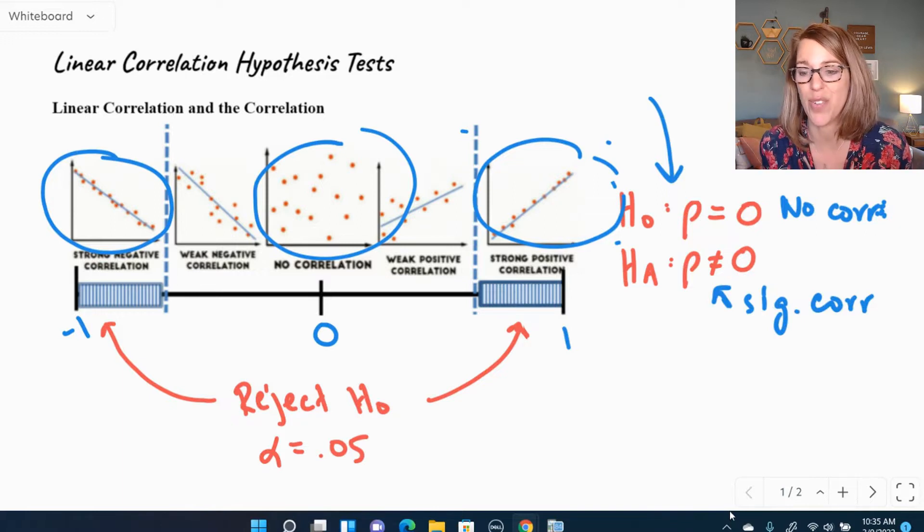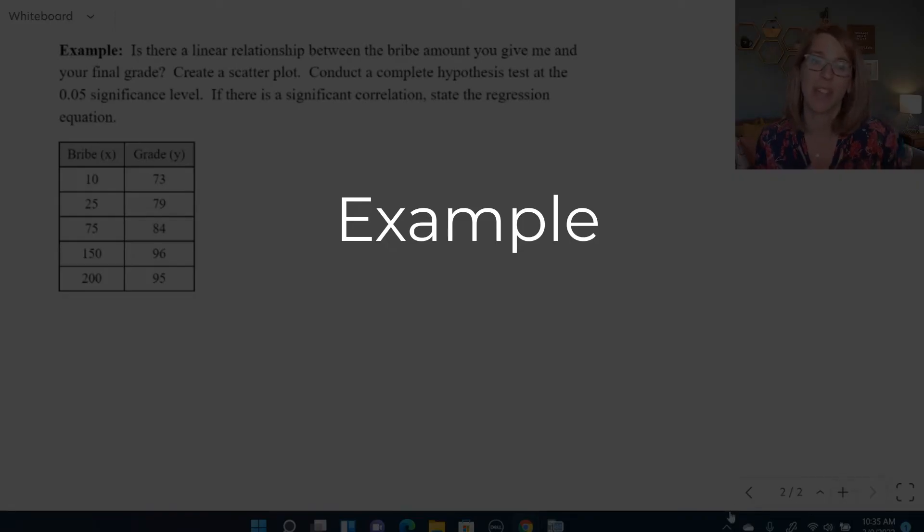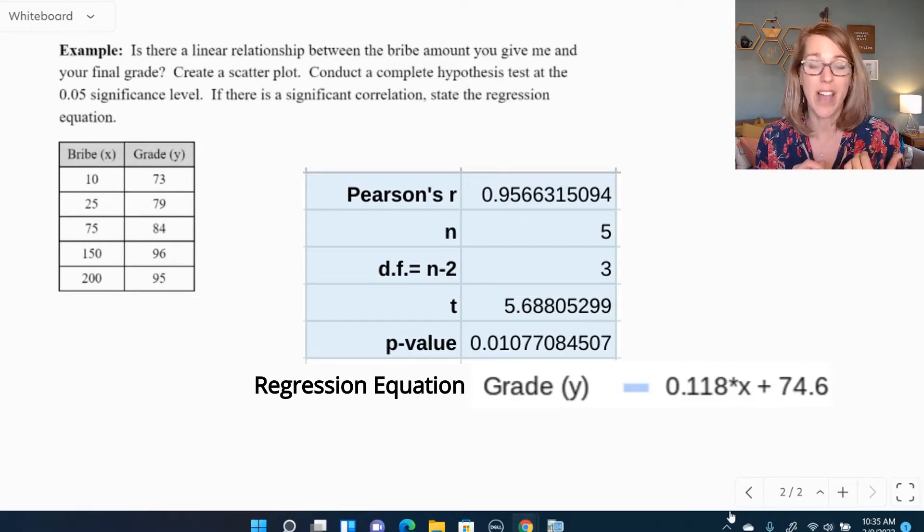Let's go ahead and dive into an example. With this example, I'm going to show you how to find the p-value, the correlation coefficient, the t-statistic, all using Google Sheets.